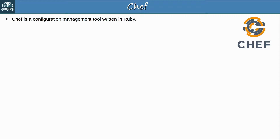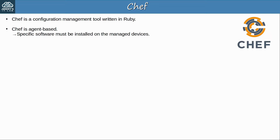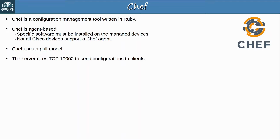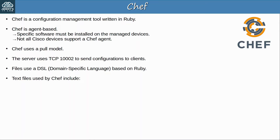Finally, let's look at Chef. Like Puppet, it is a configuration management tool written in Ruby. It is agent-based, so a Chef agent must be installed on the managed devices. Not all Cisco devices support a Chef agent — in fact most don't — so this is the least popular of the three choices. Like Puppet, Chef also uses a pull model, and the Chef server uses TCP port 1002 to send configurations to clients. Chef's files use a DSL (domain-specific language) which is based on Ruby.